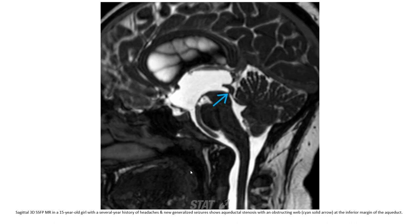This is a sagittal 3D MRI in a 15-year-old with several years of headaches and new generalized seizure. There is aqueductal stenosis with an obstruction valve at the inferior margin of the aqueduct.